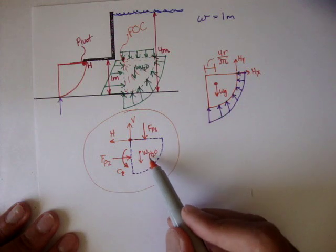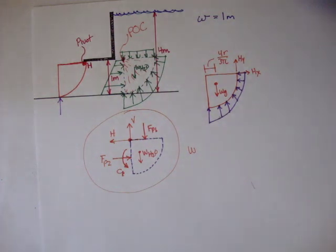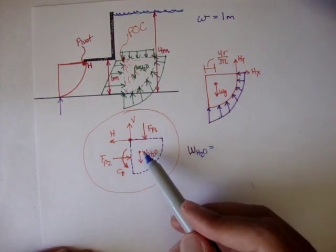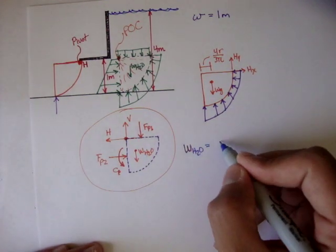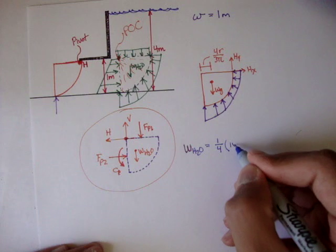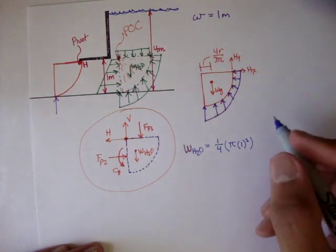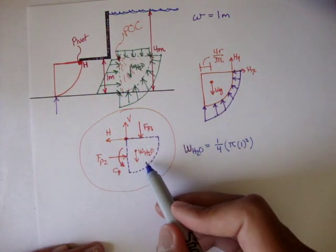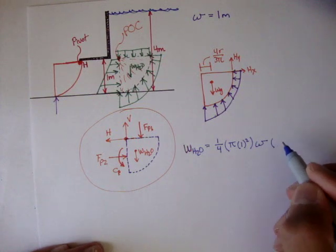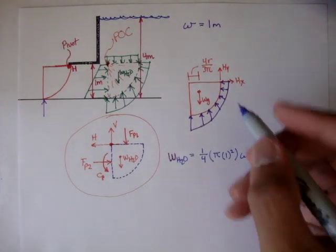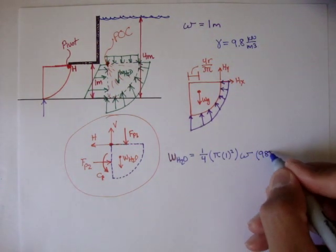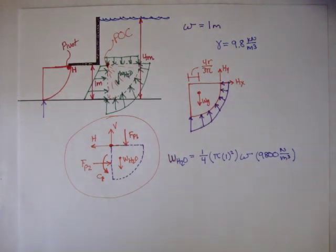Let's figure out the weight of the H2O. The weight of the H2O is going to be equal to the volume times the specific weight of this liquid. Remember, this is one quarter because it's not a full circle — it's a quarter of a circle — times the area, and the area is pi times one squared. So it's a quarter of the area times the width W, and in this case W is one, times the specific weight of the liquid. In metric, the specific weight is 9.8 kilonewtons per meter cubed, or 9,800 newtons per meter cubed. So that's the weight of the water.